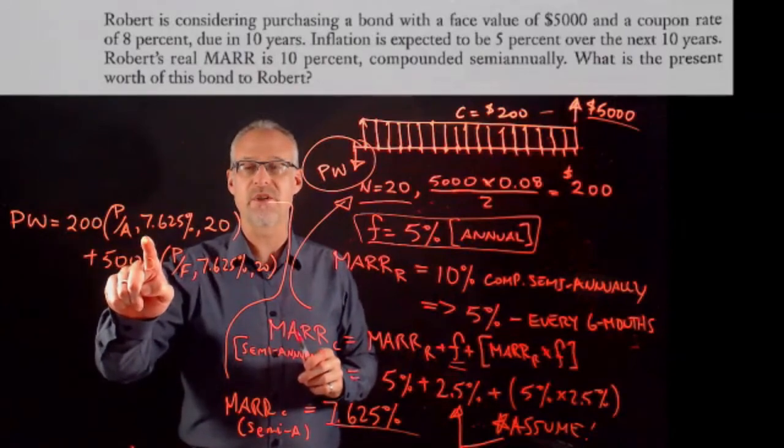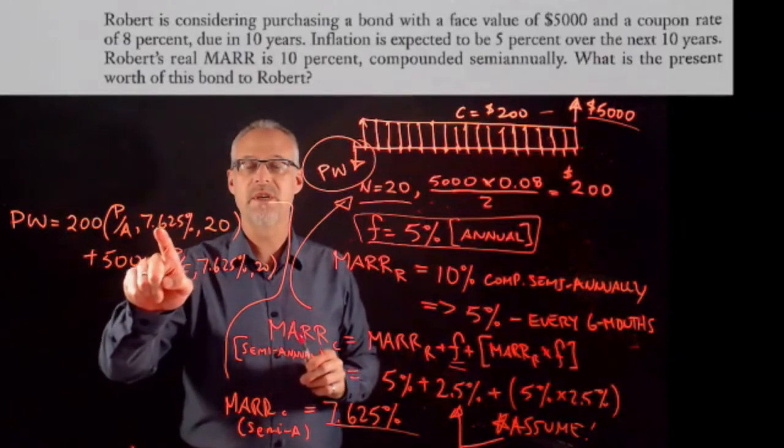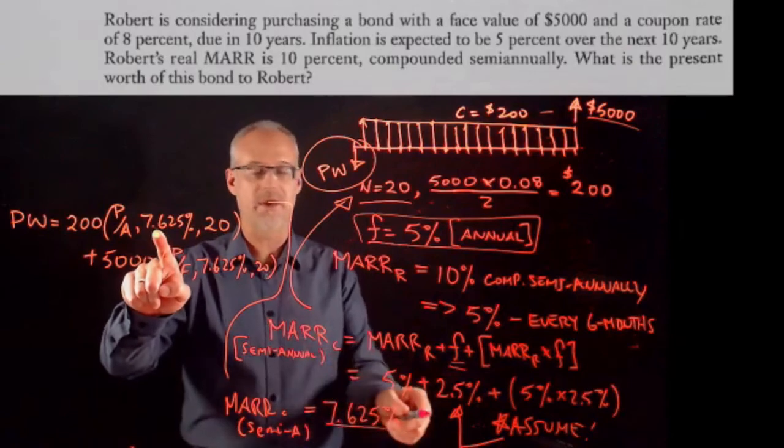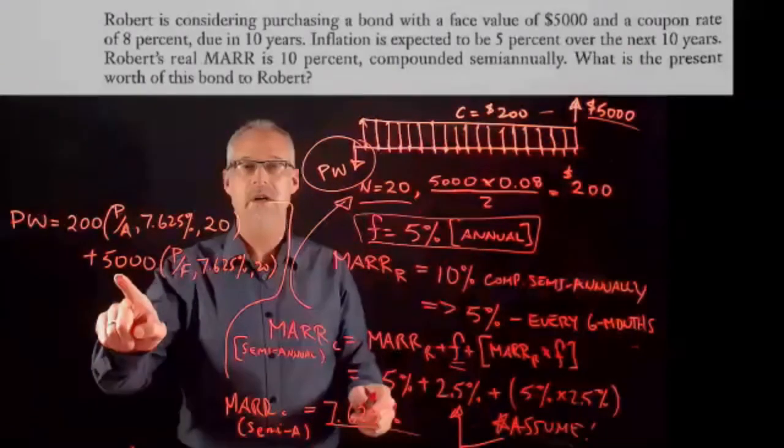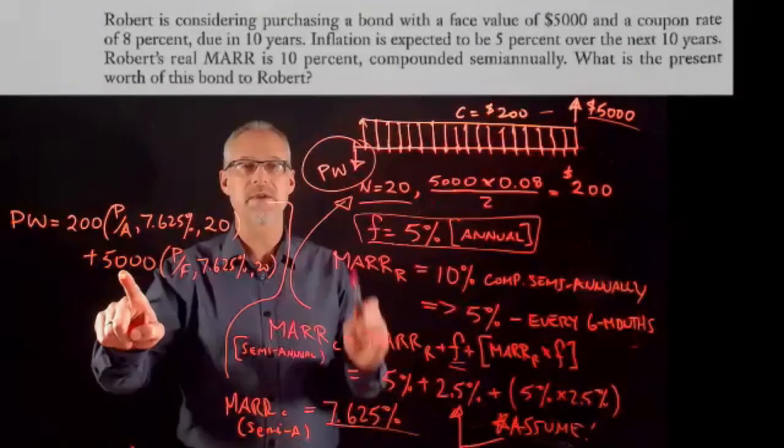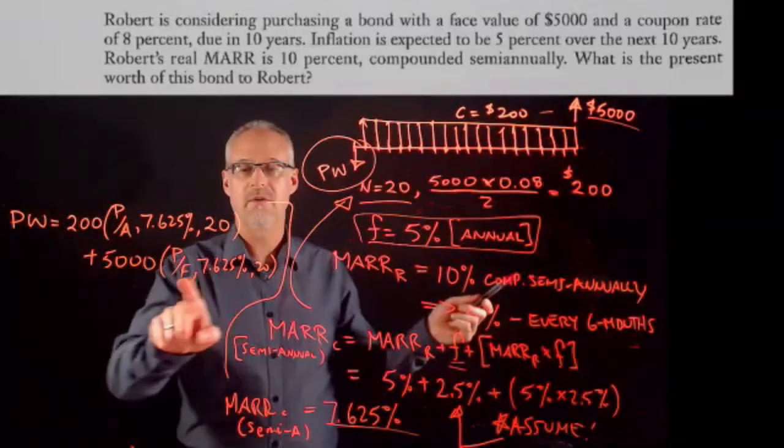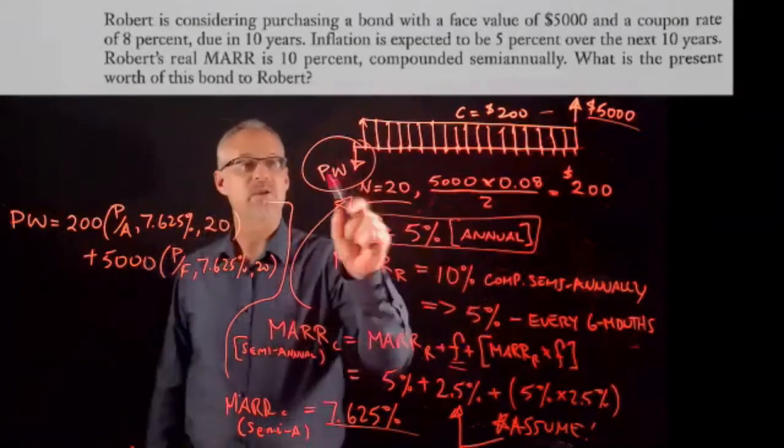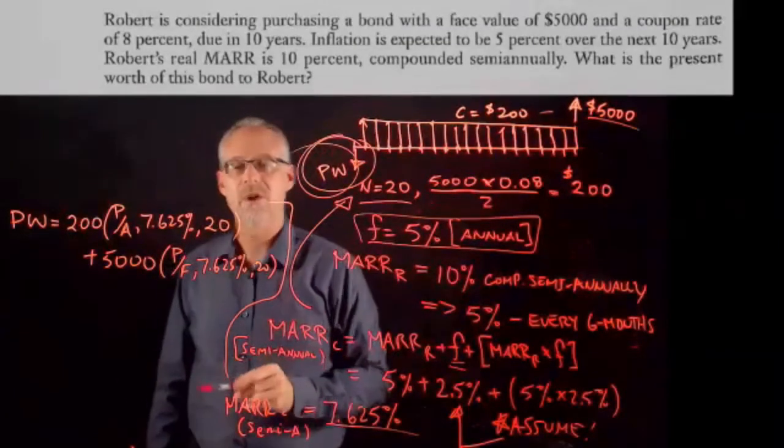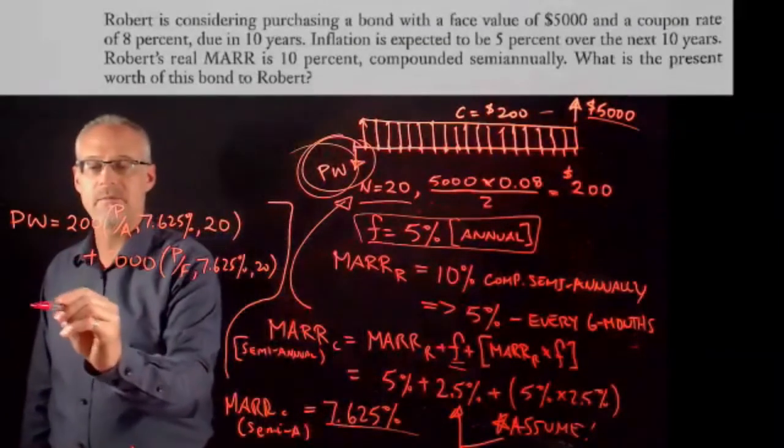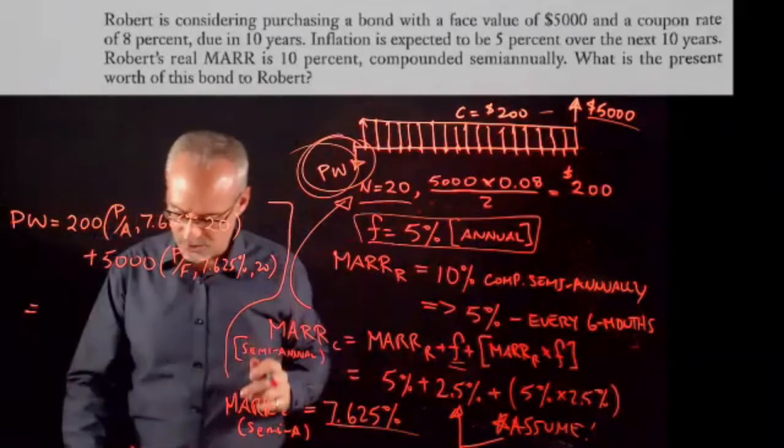This is just regular time value money stuff that we've already done in bonds, where this is the coupon payment, compound interest factor for the annuity, 20 periods, six-month rate that we calculated, current rate. The 5,000 is the face value that we get 20 periods down the road. We use the P given F, add those because we're trying to find present worth.